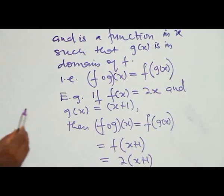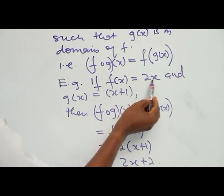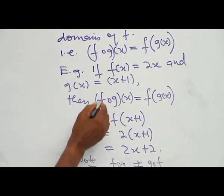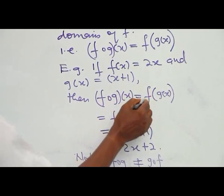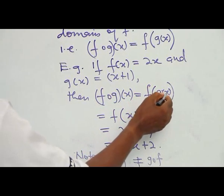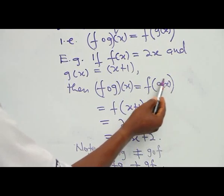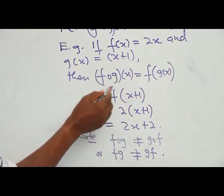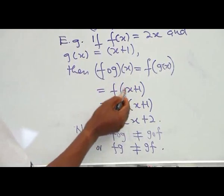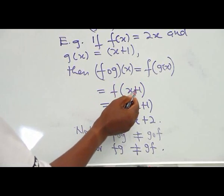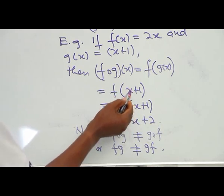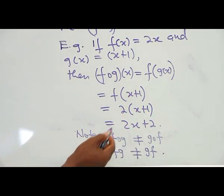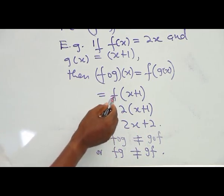Let us take an example. If G(S) = S + 1 and F(S) = 2S, then F∘G(S) = F(G(S)) = F(S + 1). Since F(S) = 2S, we replace S with (S + 1): this gives 2(S + 1) = 2S + 2. So F∘G(S) = 2S + 2.